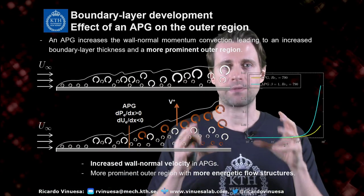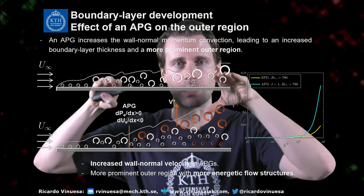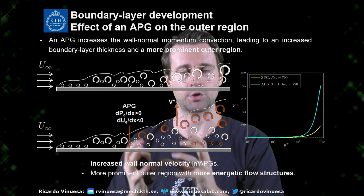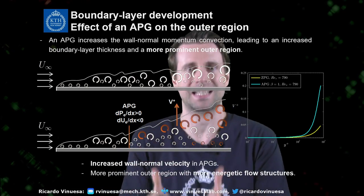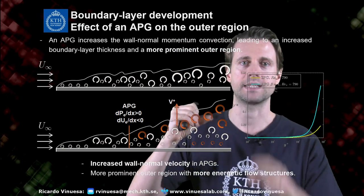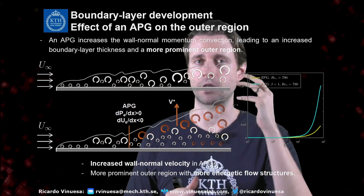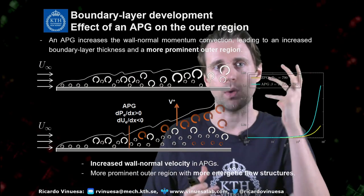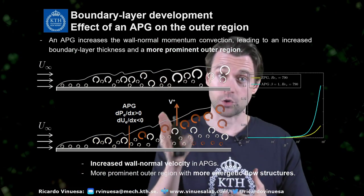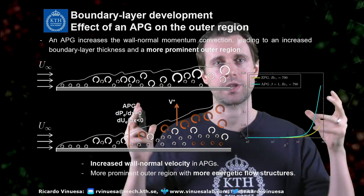When we have a turbulent boundary layer that is decelerated — when we have an adverse pressure gradient — the top shows a typical zero pressure gradient turbulent boundary layer where larger scales grow with Reynolds number. When decelerated, we have strong wall-normal convection with a lot of vertical velocity. This does two things: convection of small scales away from the wall, and development of very energetic large scales in the outer region. For a moderate pressure gradient of beta around one, the wall-normal velocity raises to about four times that of the zero pressure gradient case. Wall-normal convection is thus an essential ingredient of adverse pressure gradient turbulent boundary layers.